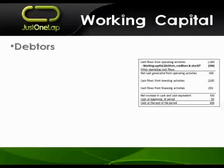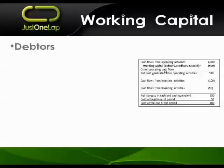Working capital is simple — it's your debtors, creditors, and inventory. In the cash flow statement, the working capital sits right there and it's a key one to watch. Depending on whether they present the cash flow statement using the direct or indirect method, this working capital may be displayed on the face of the statement or in the notes. My advice: it doesn't matter where it's hidden, go and have a look — it's critical.